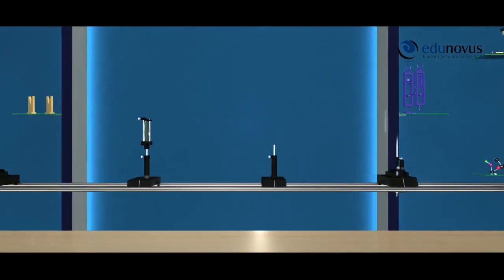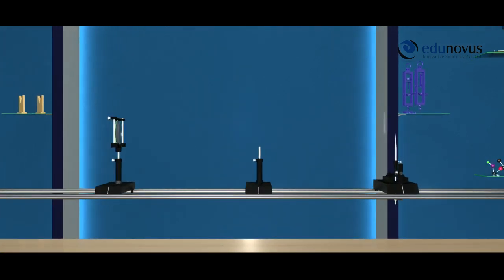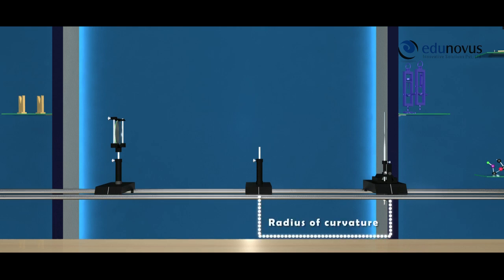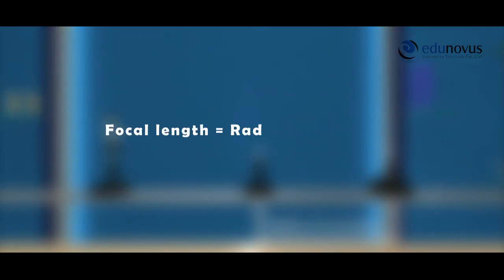To locate the center of curvature, we mount another upright known as the image needle. Adjust the position of the upright and you will observe an inverted image of the object needle on the tip of the image needle. The distance between the convex mirror and the tip of the needle gives us the radius of curvature of the convex mirror. Half the radius of curvature gives the focal length of the convex mirror.